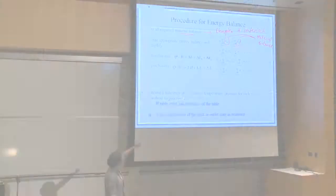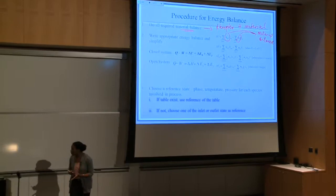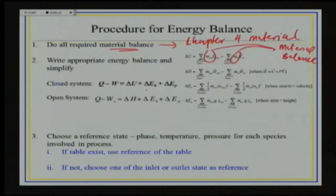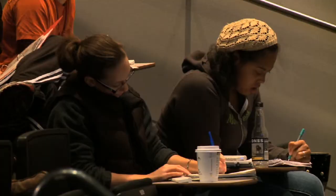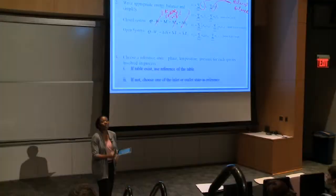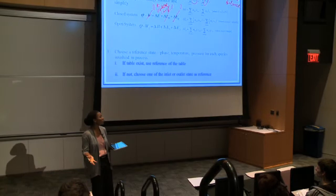You have to decide whether you have an open or a closed system. In a closed system we said that kinetic energy and potential energy is often zero, because we're typically not moving the batch from one location to another. And work is zero when there's no volume change. If you have no change in volume then work has to be zero, so Q is often equal to delta U for the closed system. For the open system, Q is equal to delta H if no moving parts and kinetic and potential energy is negligible.